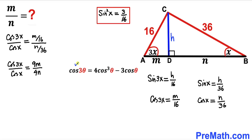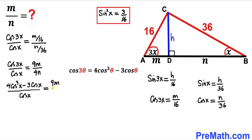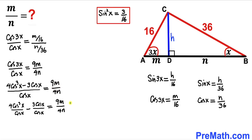Let's recall another trigonometric identity: cosine of 3θ equals 4 cos³θ minus 3 cosθ. Applying this identity to the left-hand side numerator gives (4 cos³x minus 3 cos x) divided by cos x equals 9m divided by 4n. Splitting into two terms: cosine cubed over cosine gives cosine squared, and cosine over cosine cancels to 1. So the left side becomes 4 cos²x minus 3.